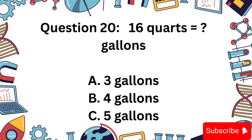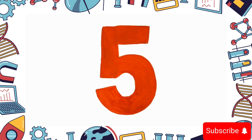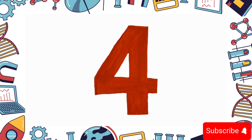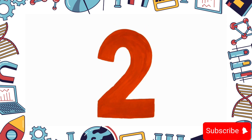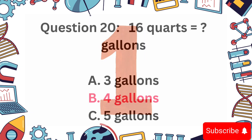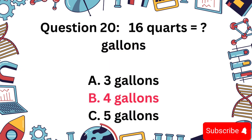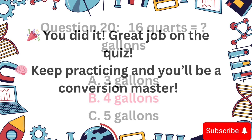Question 20. 16 quarts is equal to how many gallons? A: 3, B: 4, or C: 5? Awesome — the answer is B: 4 gallons, because 16 divided by 4 equals 4.